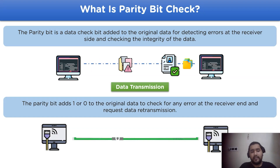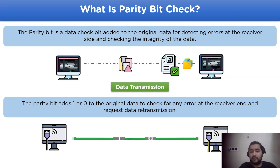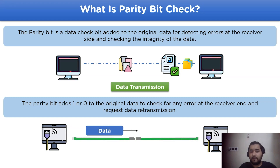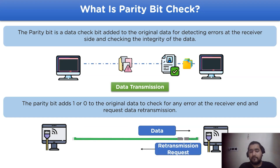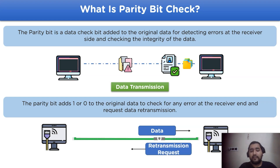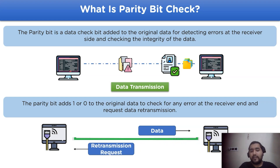The parity bit adds one or zero to the original data that is to be transmitted to the receiver side. If there is an error in the received data, the sender side will do the parity check and send a request for retransmission of the data.